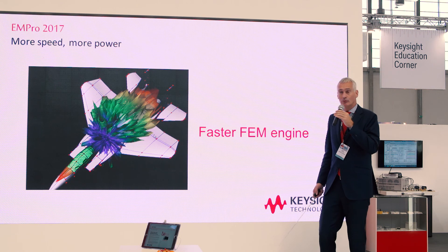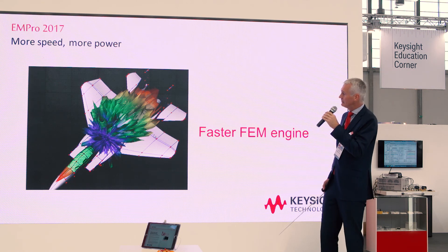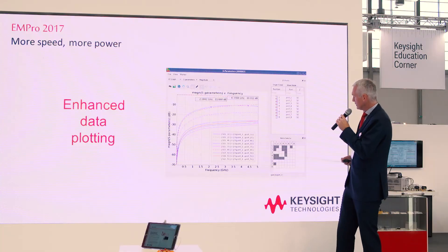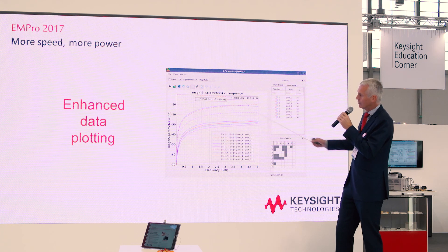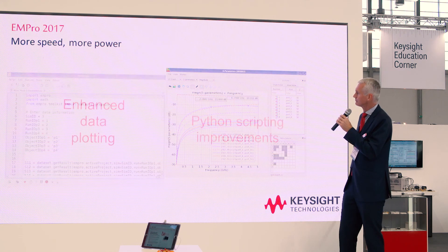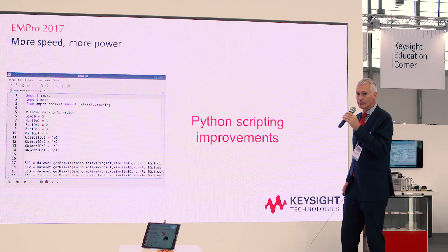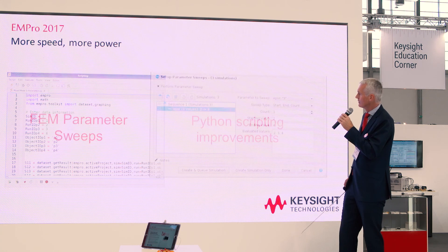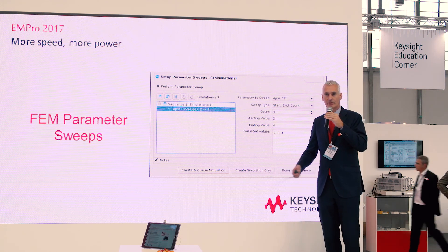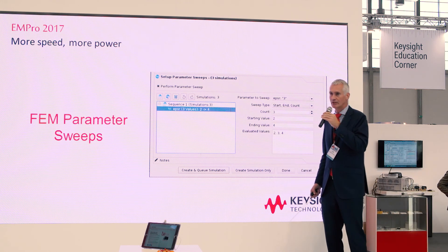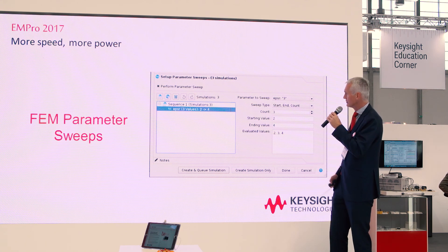What's new in EMPro 2017: the FEM solver has been significantly improved and is much faster than before. There is enhanced data plotting functionality — for example, you can easily select which S-parameters to display in a graph. Python scripting has been improved, and there is now a finite element parameter sweep, allowing you to sweep a parameter across a bunch of simulations and see the effect of changing that parameter in your design.